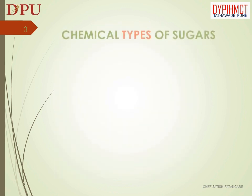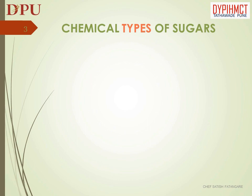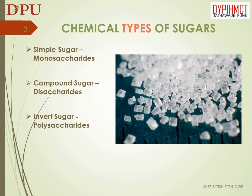In this slide we will talk about chemical types of sugar. Chemical types of sugar are: Simple sugar — it includes glucose or dextrose and fructose or galactose. These are called monosaccharides. Compound sugar — it includes sucrose, lactose, and maltose. These are called disaccharides.